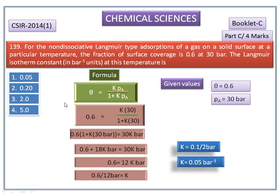Now we check the answer. The first option has 0.05, so the Langmuir isotherm constant is 0.05 per bar. Thank you.